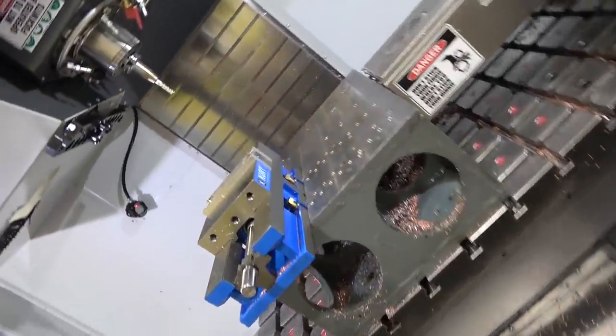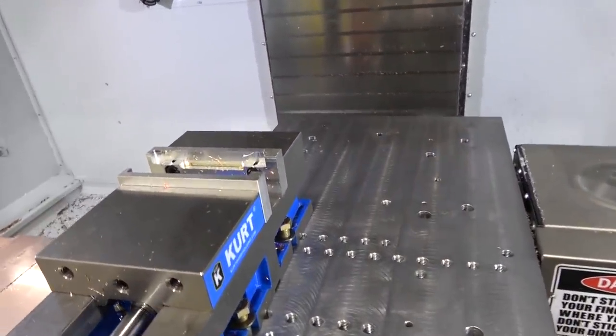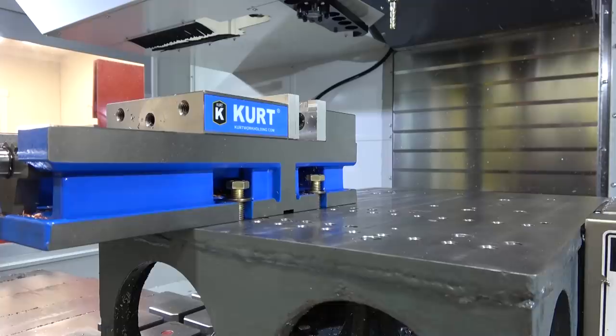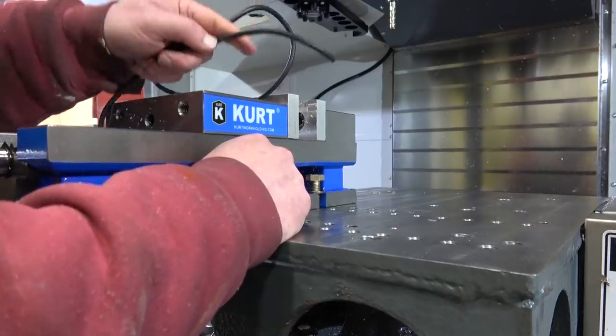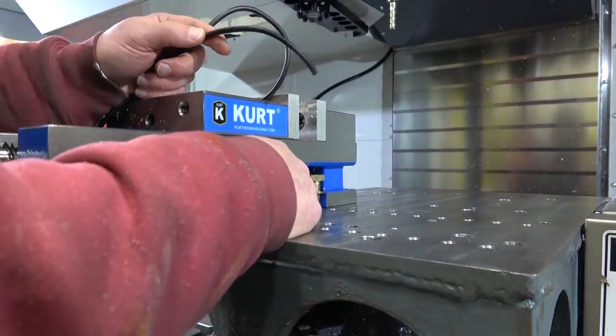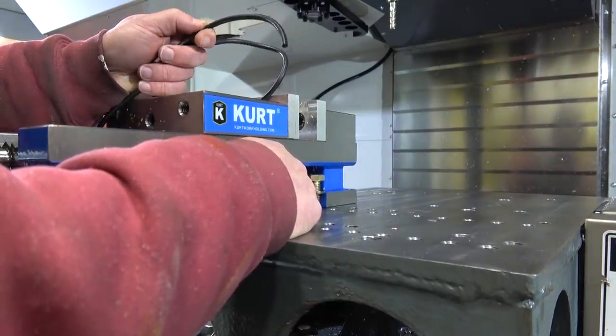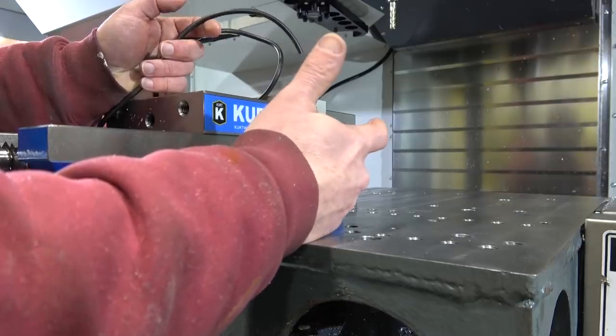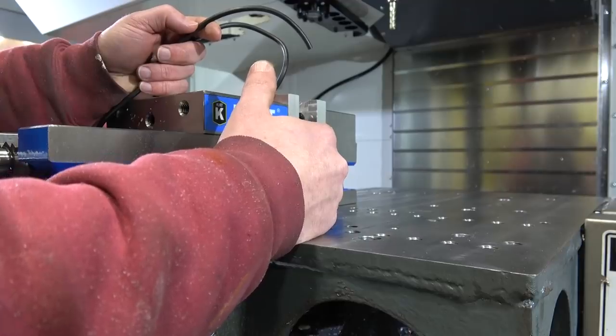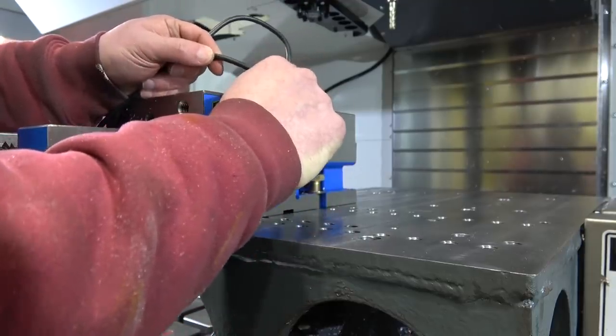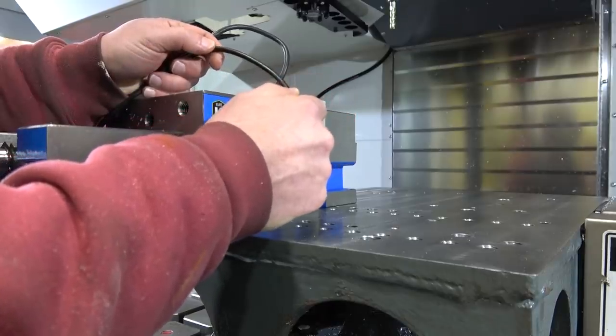So we're going to make a vacuum hold down jig. These are commercially available, cost you about $2,000. Now the beautiful and terrible thing about the human mind is we don't know what we don't know. And I really don't see why a hold down should cost $2,000 considering it's a chunk of aluminum, a Venturi air blower and some of this stuff. O-ring material, Buna N.